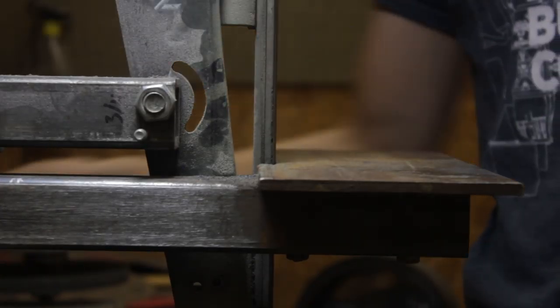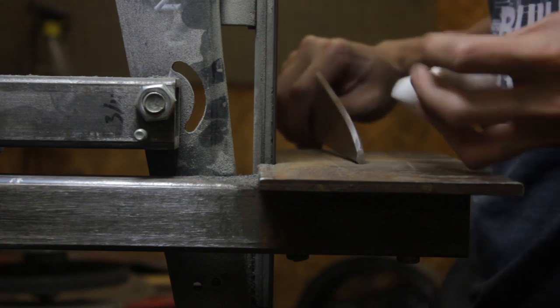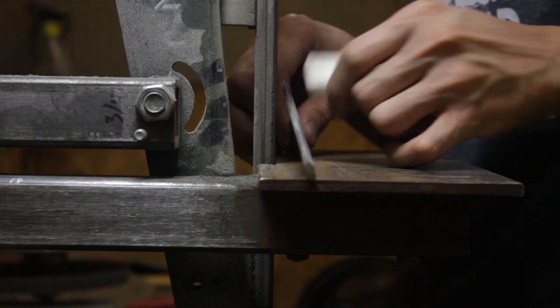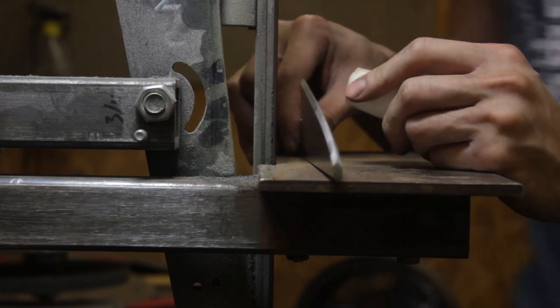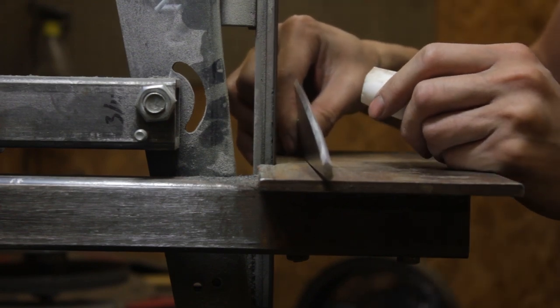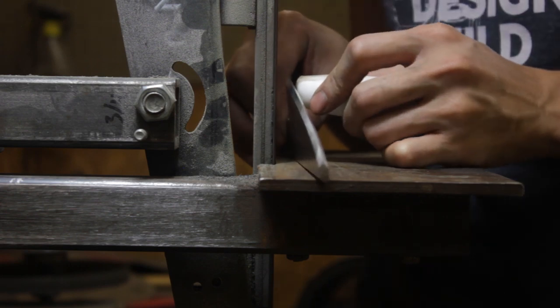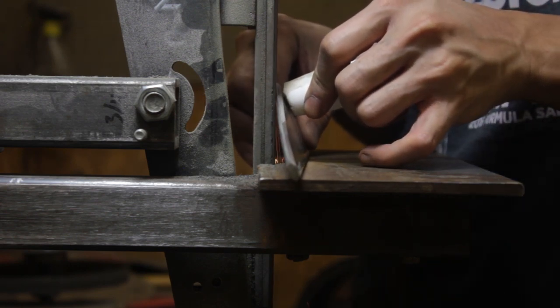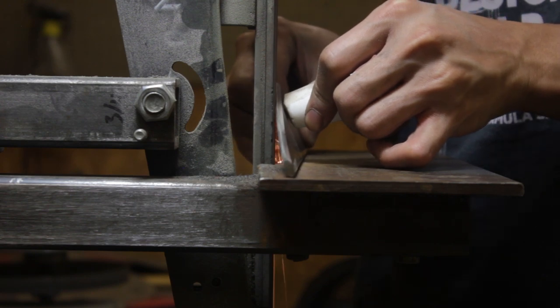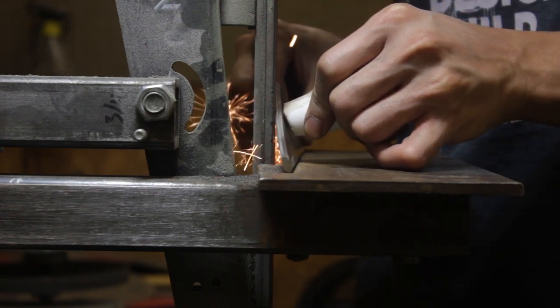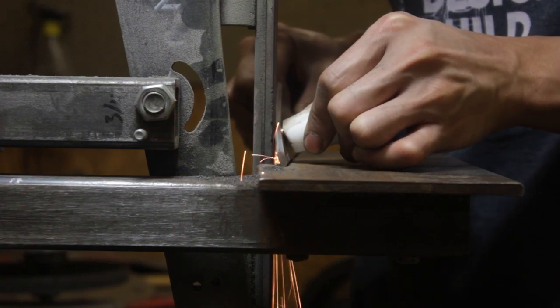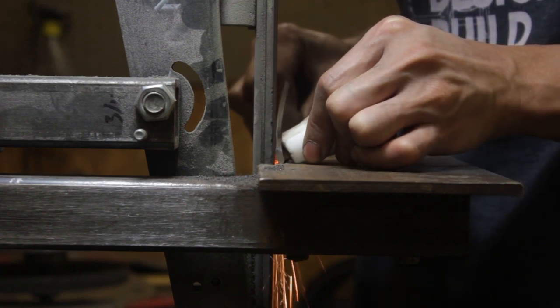I rough grind using a work rest and a push stick. This is a technique taught by master smith Tim Hancock and I really like it a lot because all of my energy is directed into the blade instead of having to hold up the knife. I don't need to worry about burning my fingers. To address heat buildup when grinding, I use fresh abrasives and I moderate my speed and pressure depending on where I'm grinding. The last thing I want is to accidentally overheat the steel and ruin the heat treatment.